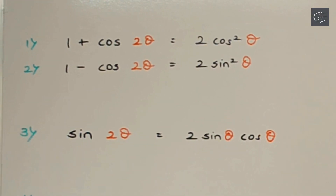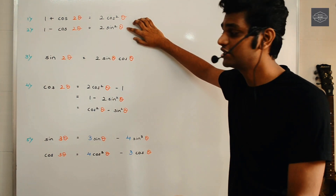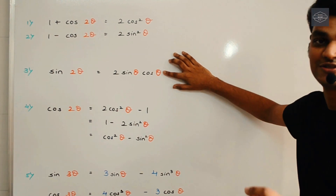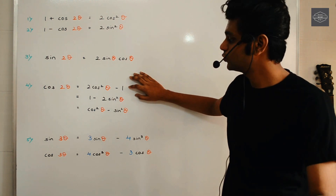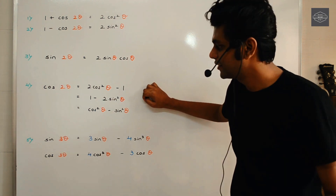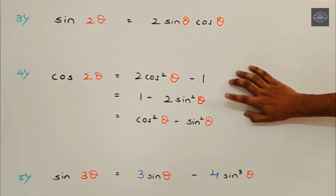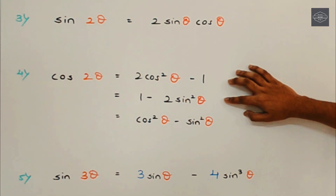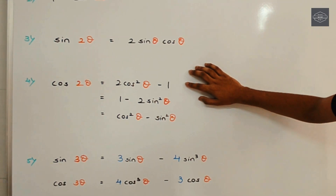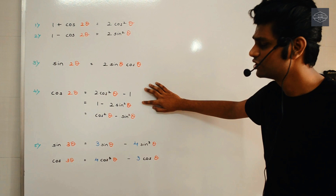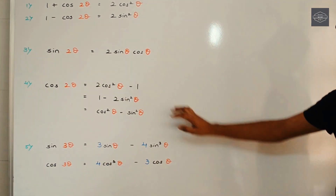So: 1 plus cos, 2 cos square — 1 plus cos, 2 cos square — 1 minus cos, 2 sin square — 1 minus cos, 2 sin square — sin 2θ, 2 sin cos — sin 2θ, 2 sin cos. And then we have cos 2θ, for which we have 3 different formulae. Their rhythm is: 2 cos square minus 1 — 2 cos square minus 1 — 1 minus 2 sin square — 1 minus 2 sin square — cos square minus sin square — cos square minus sin square.